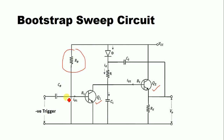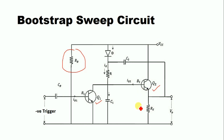The base of transistor Q1 is also connected to the input capacitor CB. The collector of transistor Q1 is connected to the base of transistor Q2. The collector of Q2 is connected to VCC while its emitter is provided with a resistance RE.